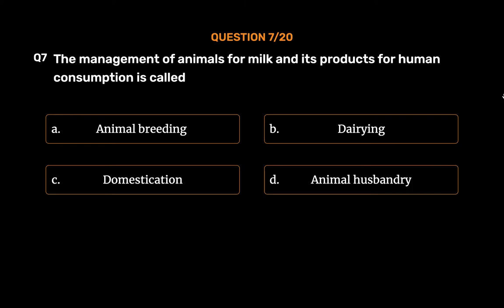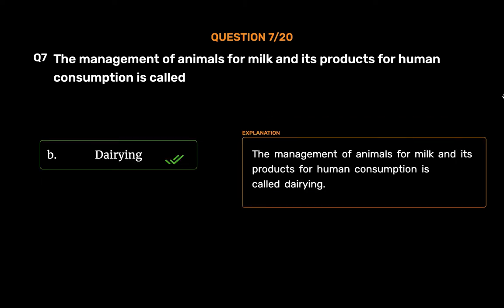The correct answer is Option B: Dairying. The management of animals for milk and its products for human consumption is called dairying.